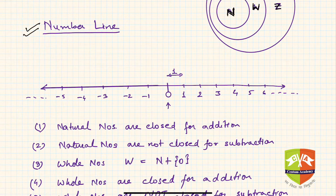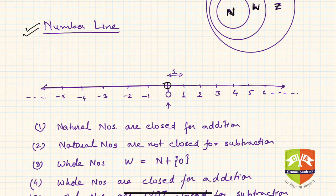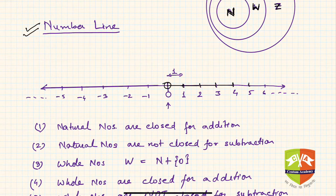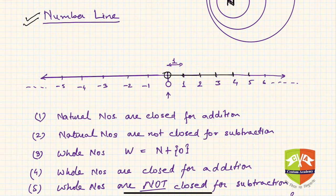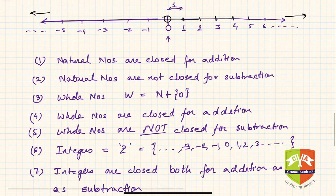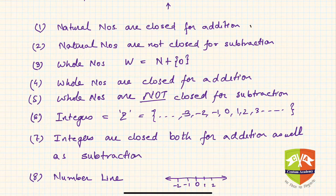We represented integers on a number line — an infinitely long line. We started from a point marked as 0 and divided the line into equal intervals. We indicated positive integers 1, 2, 3, 4 on the right-hand side of 0, and negative integers on the left-hand side, with the line extending infinitely in both directions.